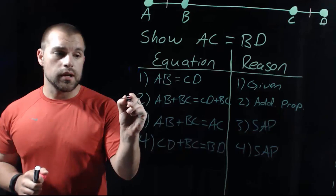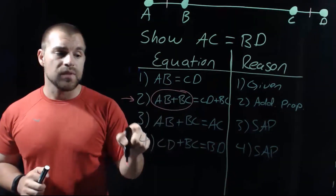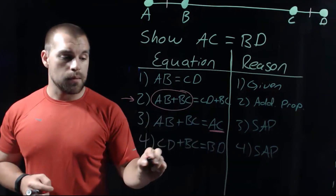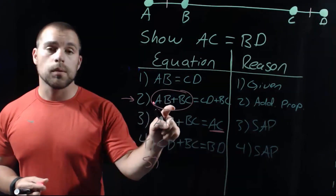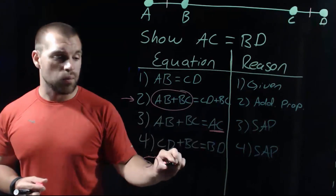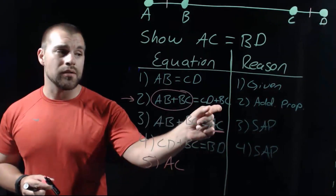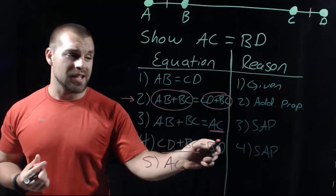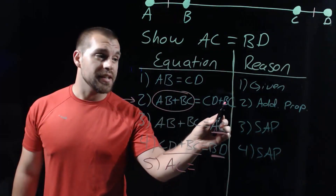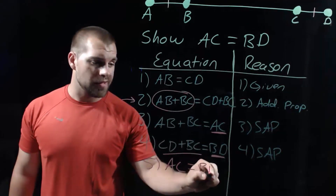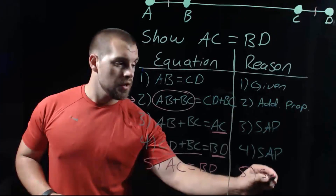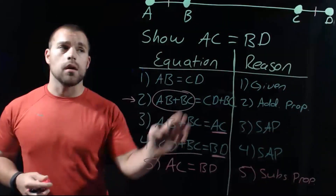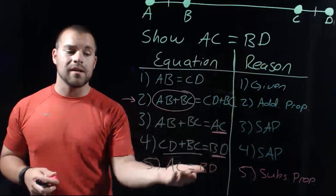In step two we had AB plus BC, and in step three we said that AB plus BC is the same thing as AC. So in step five we use the substitution property — we replace AB plus BC with AC. Similarly, CD plus BC was shown equal to BD, so we replace that with BD. Our reason for both substitutions is the substitution property. We replaced something with something it was equal to, and now we're done — we've shown AC equals BD.